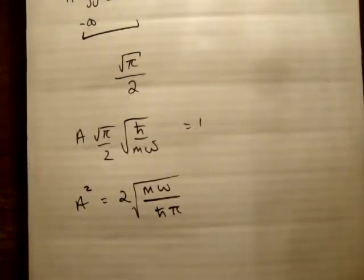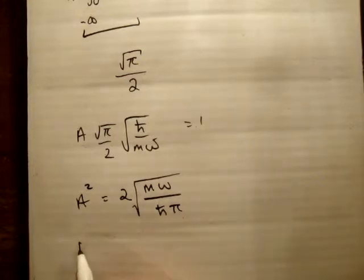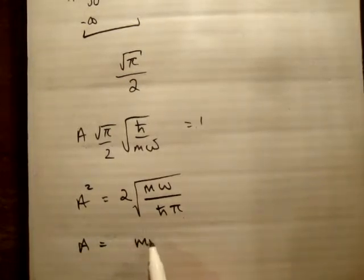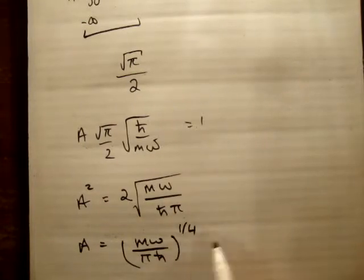Am I missing something here, why is there a 2 there? No, that's correct. Okay, so therefore A is equal to m omega over π h bar to the quarter times root 2.